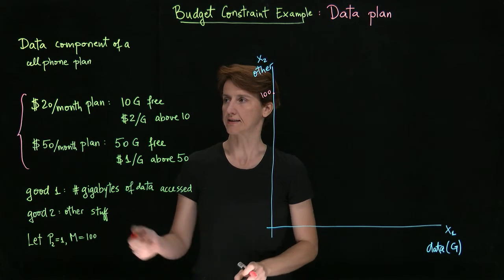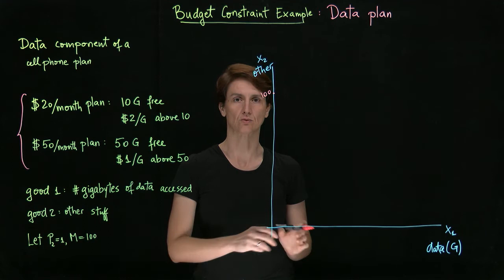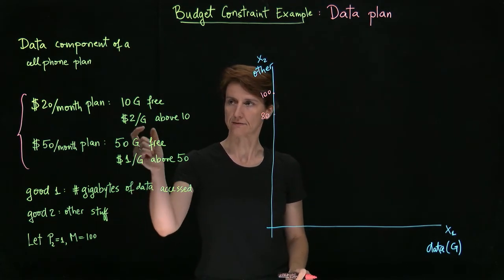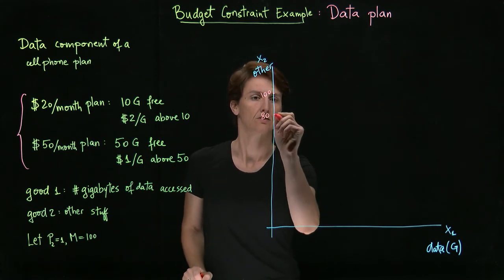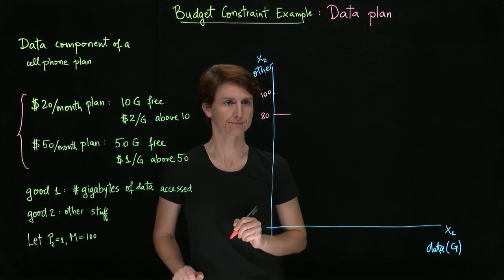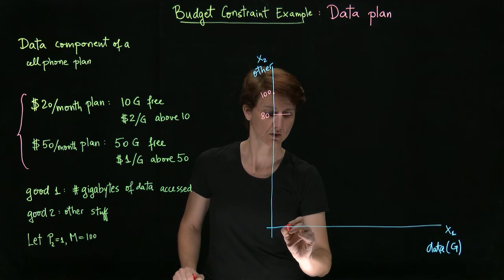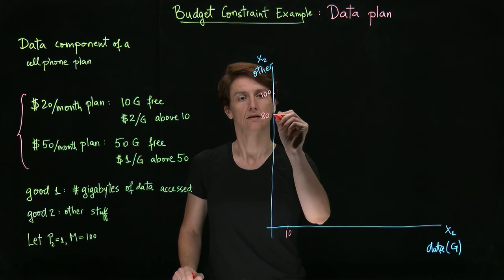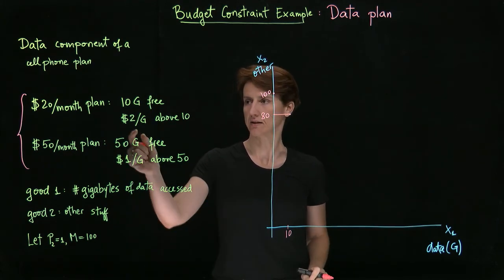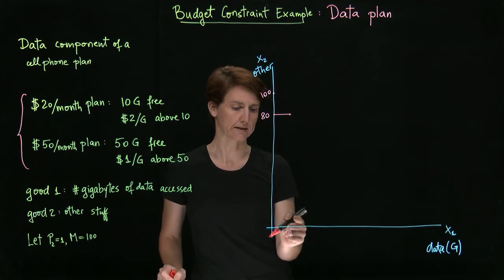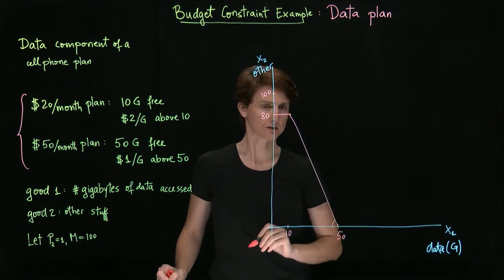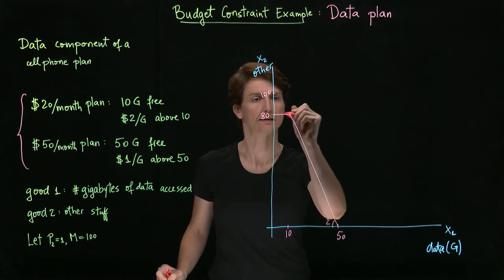Or we have the options of buying, let's say, the twenty dollar a month plan. That means that we'll only have eighty dollars left to spend otherwise on either data or other things. If we do that, then we will have access to ten gigabytes for free. So as we start using data, the initial price will be zero. That means that the budget constraint will be flat over some portion until we get to a level of ten gigabytes. After that, the price will be two dollars a gigabyte. How much can we buy at most? Well, with eighty dollars and two dollars each, that means we could afford forty gigabytes above ten at most. So the budget constraint here has slope two, and here has slope zero.